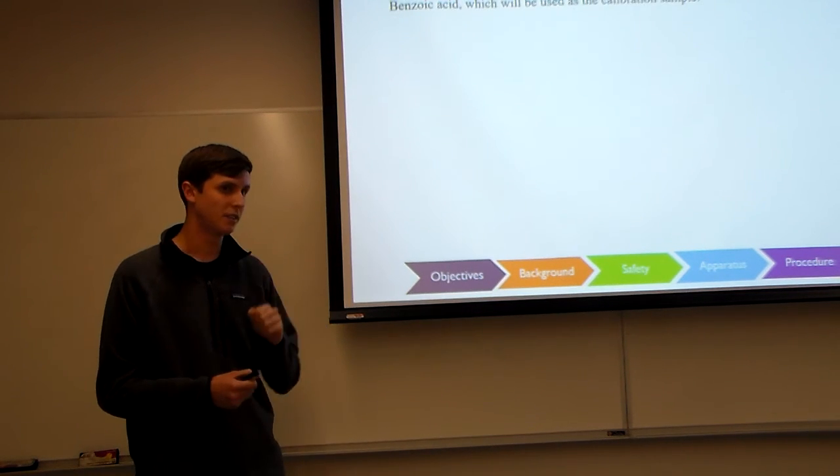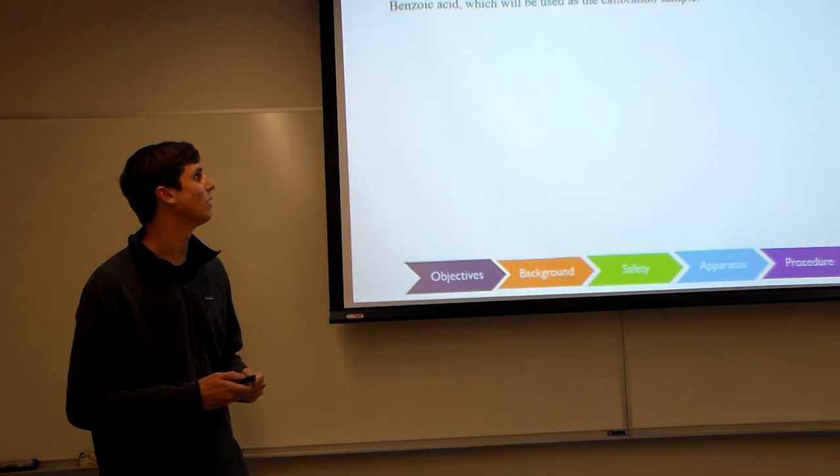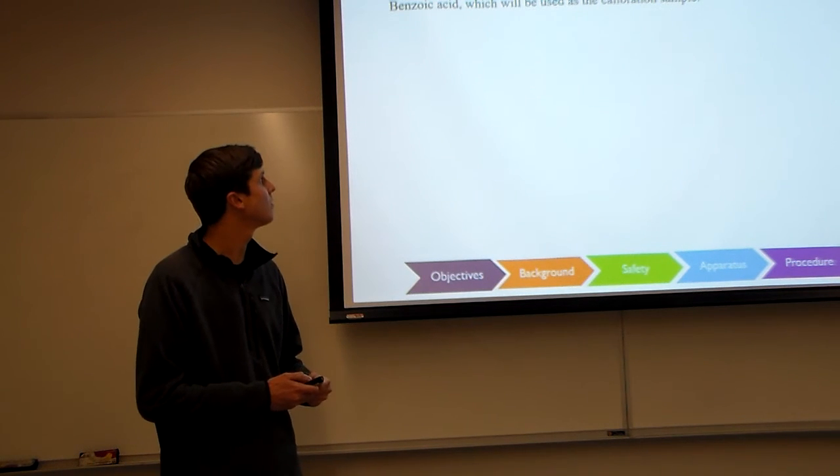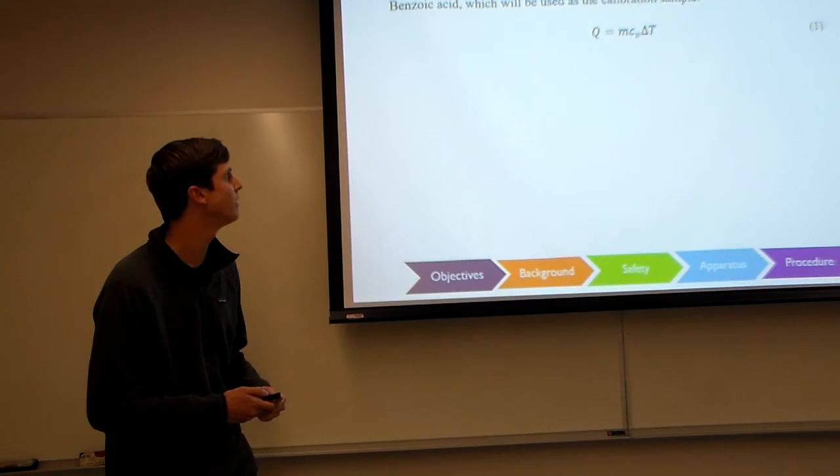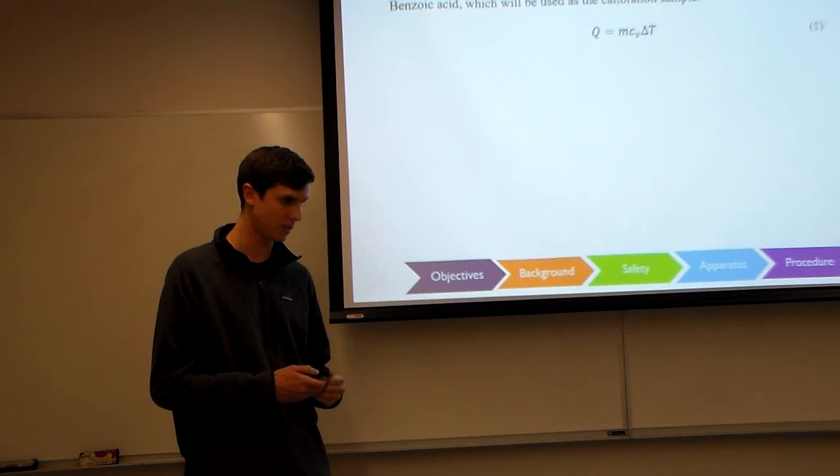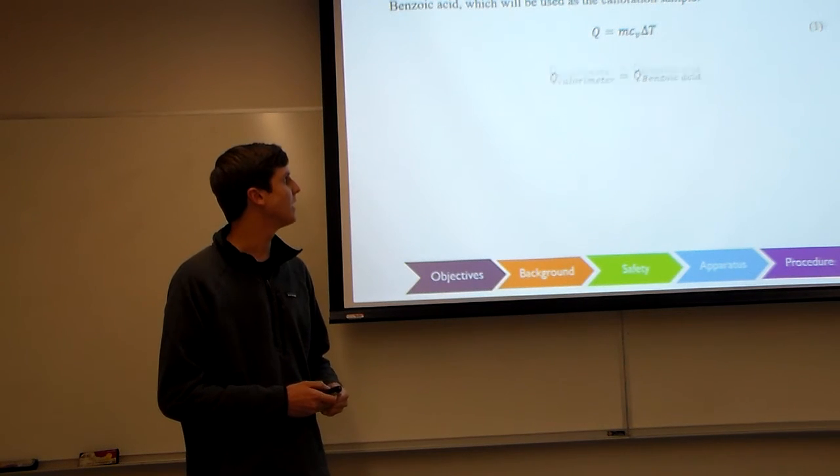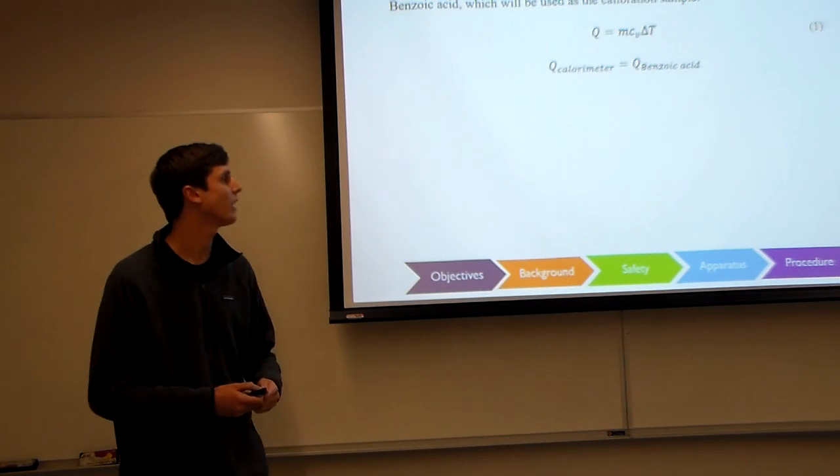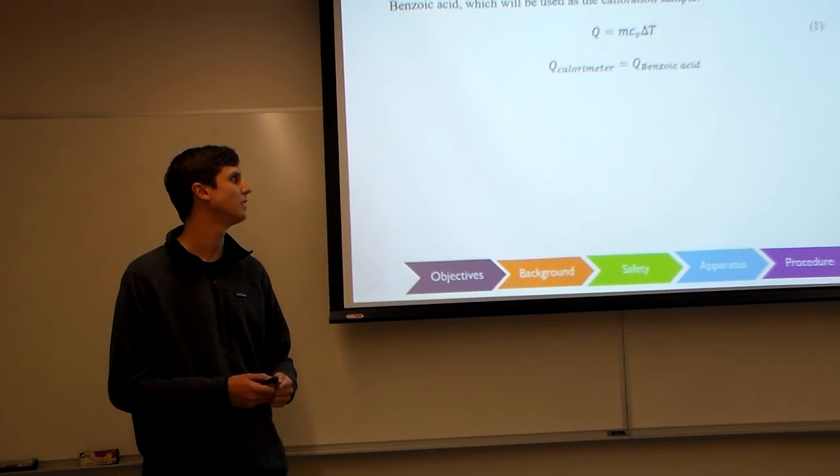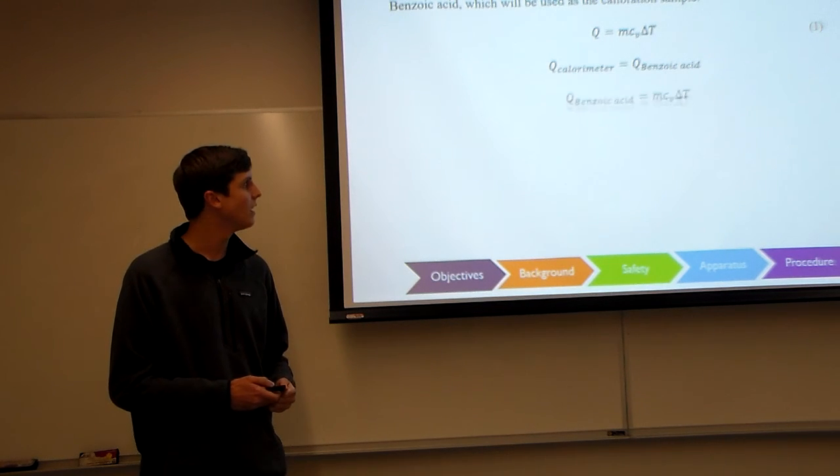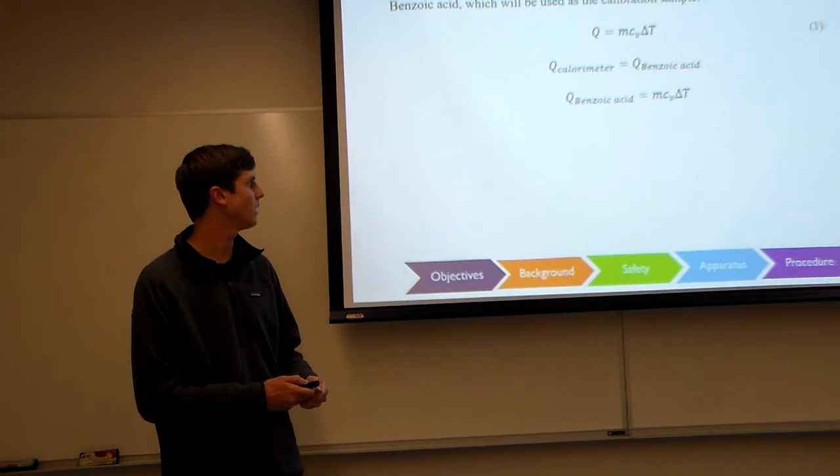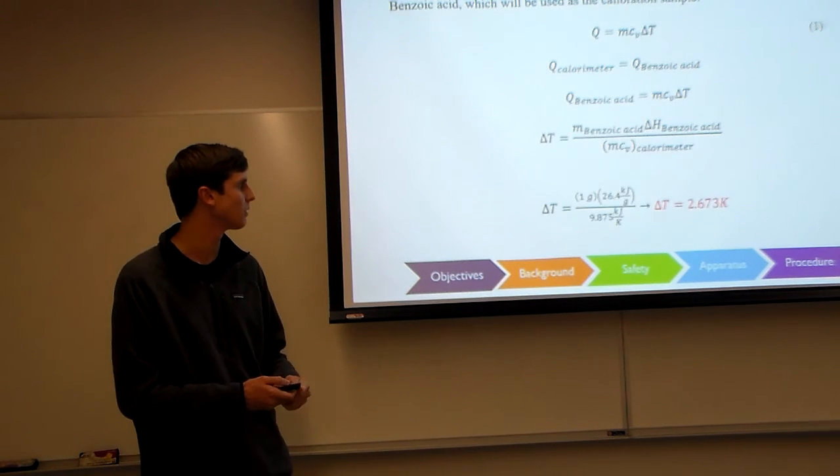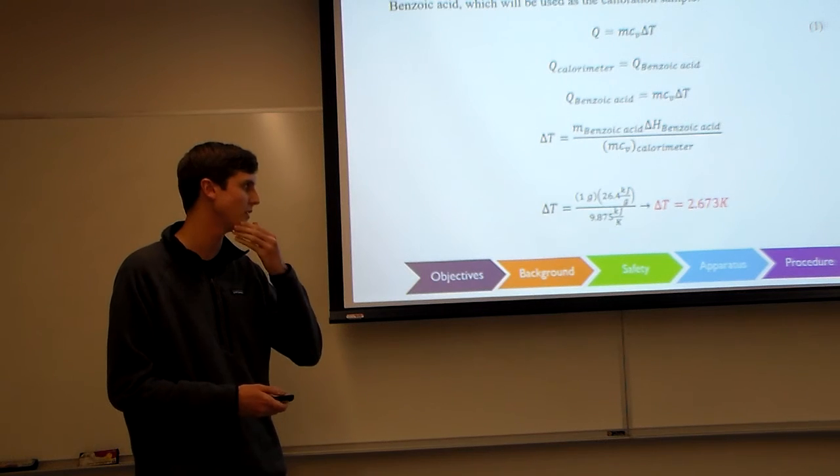So next we're trying to find the change of temperature of this system. We can do that by using the formula that we introduced earlier, which was heat combustion equals thermal capacitance times change in temperature. We can set the heat combustion equal to the heat combustion of the benzoic acid. We can maneuver some things around, and we found that change in temperature was equal to roughly 2.673 degrees Kelvin.